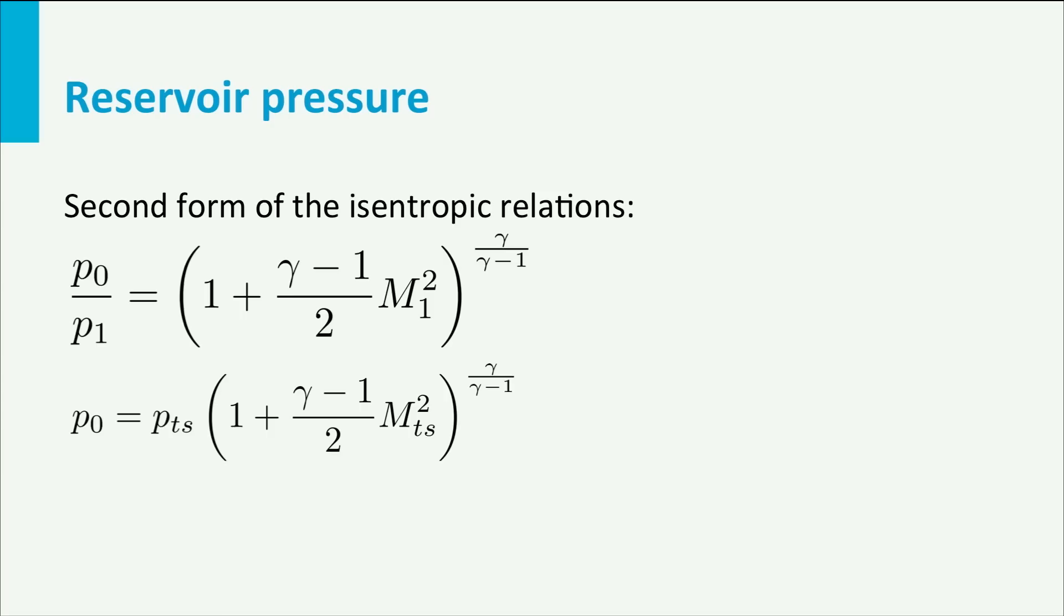Now we have found an equation with four variables and just one unknown, namely P0. MTS is the required test section Mach number of 3, gamma is 1.4, and PTS is the given standard of 1 atmosphere or 1.01325 × 10^5 N/m². If we fill in the knowns, we find P0 is 36.73 atmospheres.